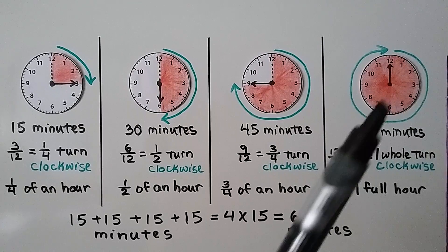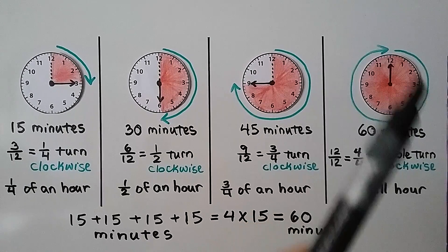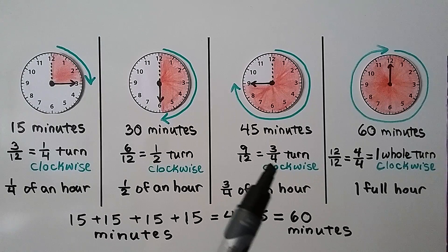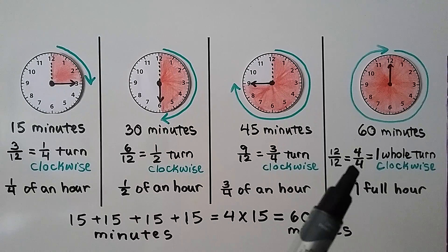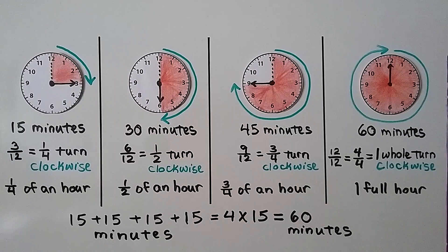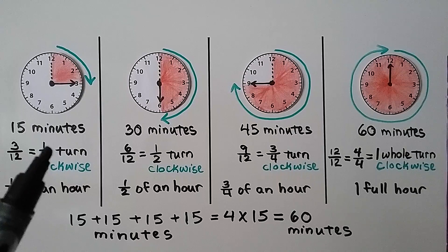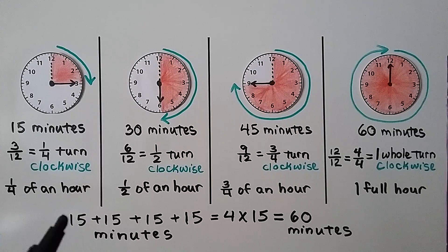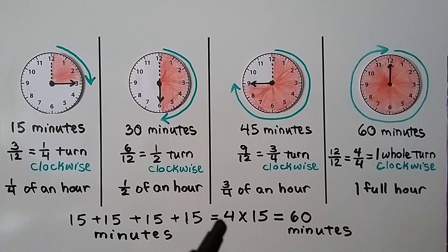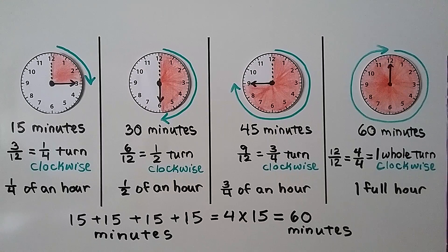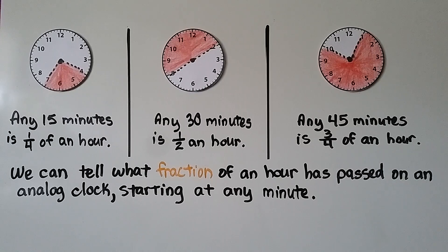Sixty minutes: that's twelve of twelve equal parts, or four-fourths — one whole turn clockwise, one full hour. And fifteen minutes is one-fourth; fifteen plus fifteen plus fifteen plus fifteen equals four times fifteen minutes, which is sixty minutes for an entire hour. Any fifteen minutes is one-fourth of an hour.